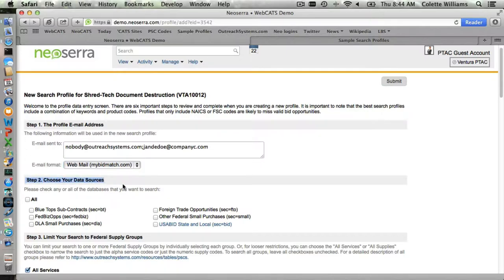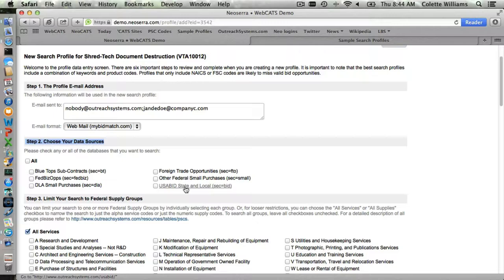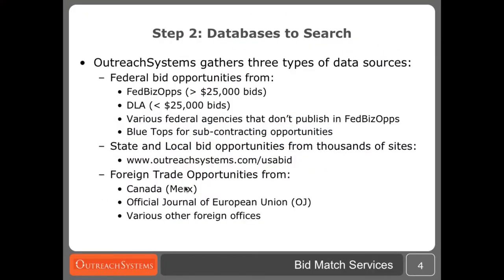The second step as we discussed is choosing your data sources. We have six different data sources that you can choose from. There's either federal bid opportunities, state and local bid opportunities, or foreign opportunities. Our federal bid opportunities come from four different sources. One of course is the FedBizOps database which contains generally speaking bids greater than $25,000 in value. These bids are from a wide variety of federal agencies — both Department of Defense and civilian agencies in both the commodities and the services area. The DLA database on the other hand is only commodity based. You won't find any service contracts in the DLA database. The DLA database contains all the bids coming out of the depot centers and generally speaking are less than $25,000 in value.